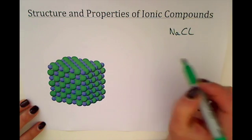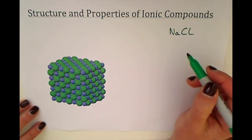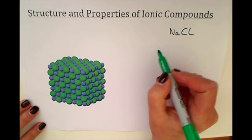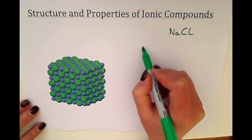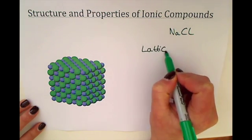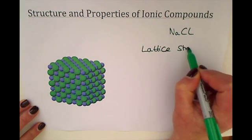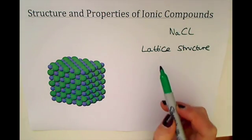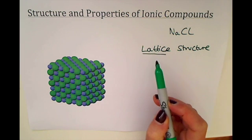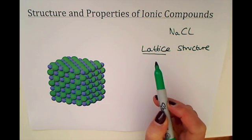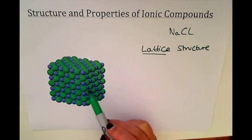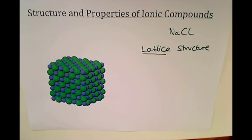But in general, the structure of ionic compounds are similar in that they have a lattice structure. All we mean by lattice structure is that there is a regular repeat of three-dimensional arrangements of atoms, or ions in this case.